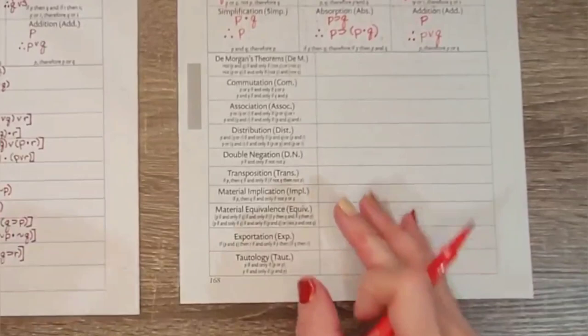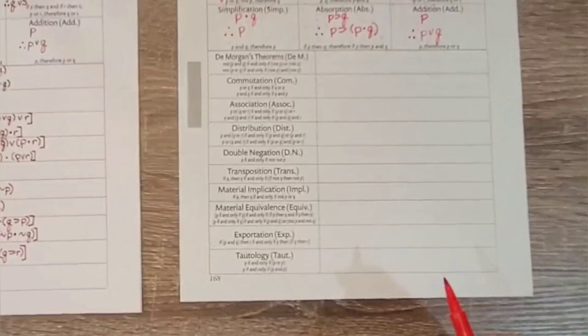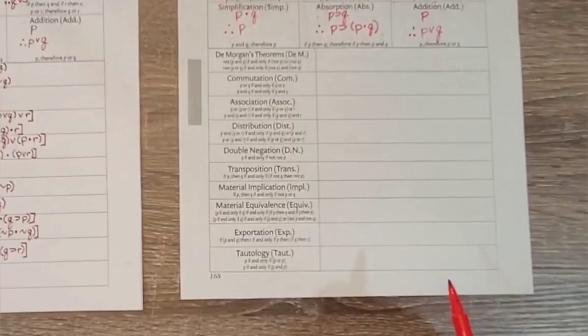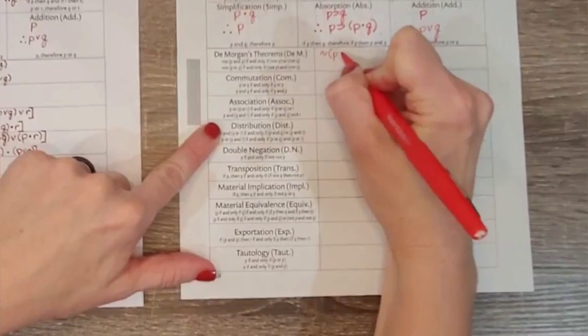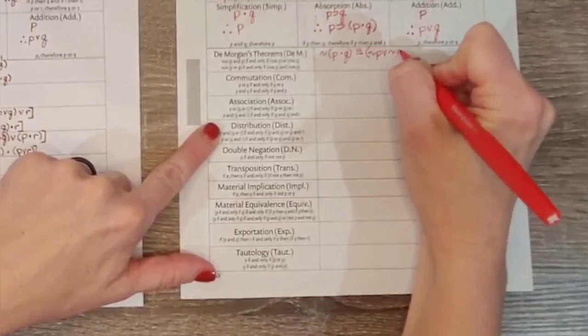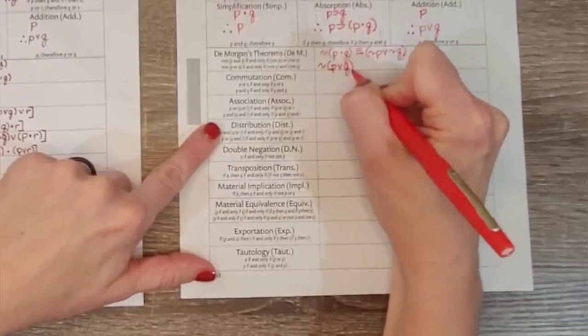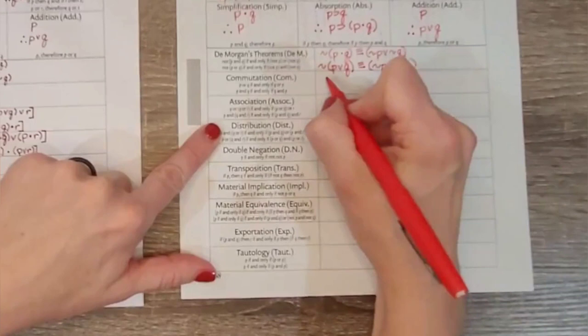Now we're going to go down to some more complicated laws. Basically each of these biconditional signs just say that what you have on the left equals what you have on the right, and you can switch them out in your homework. De Morgan's laws: not P and Q, if and only if not P or not Q. Not P or Q, if and only if not P and not Q.